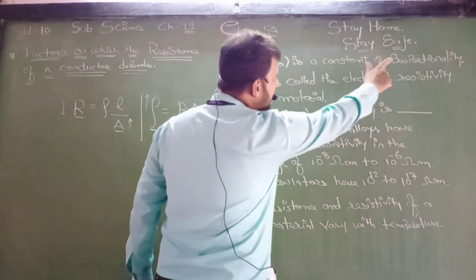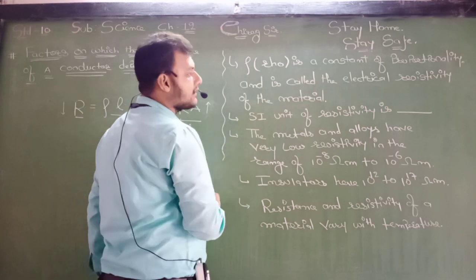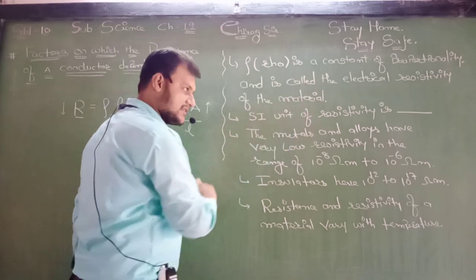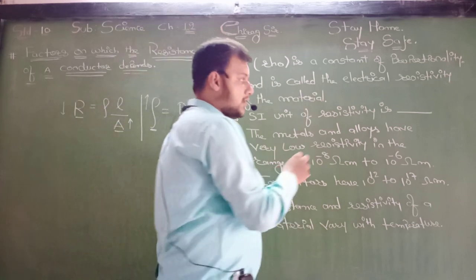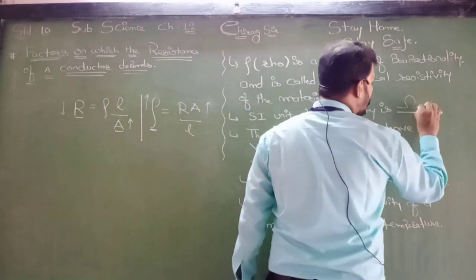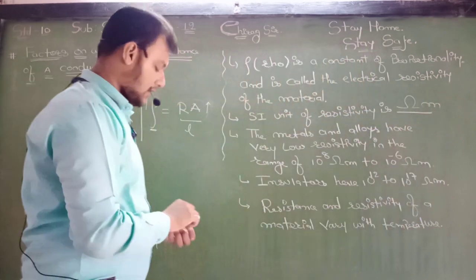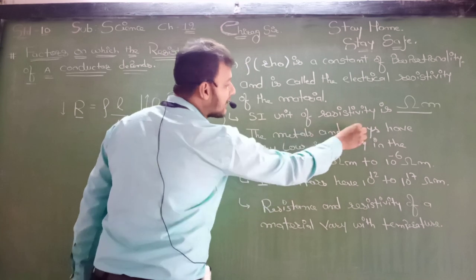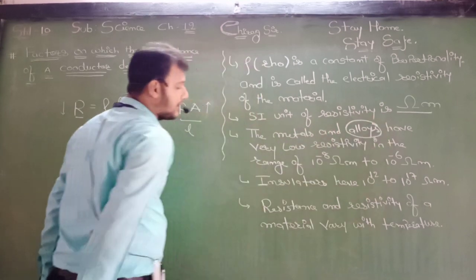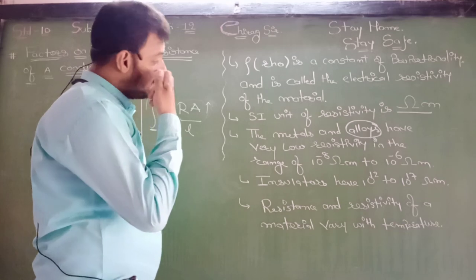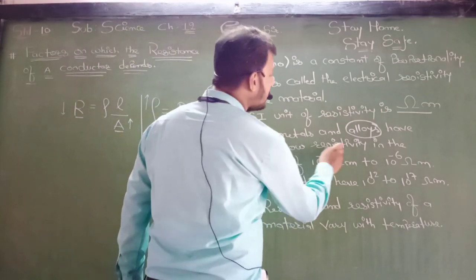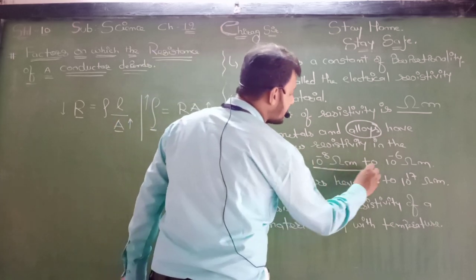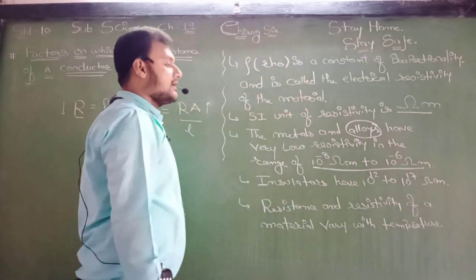Rho is a constant of proportionality and it is called the electric resistivity of a material. Just now I have proved its unit is ohm meter. Metals and alloys have very low resistivity in the range of 10 raised to minus 8 to 10 raised to minus 6 ohm meter.